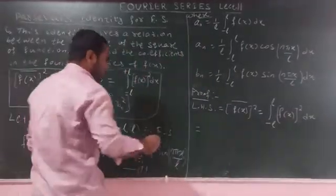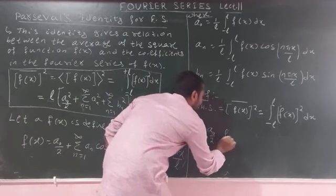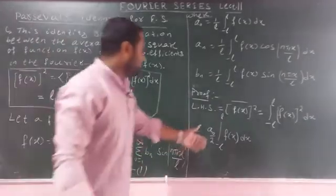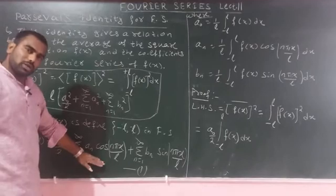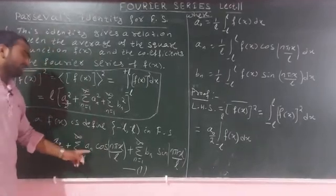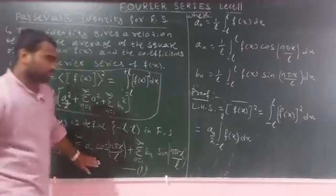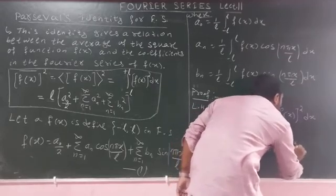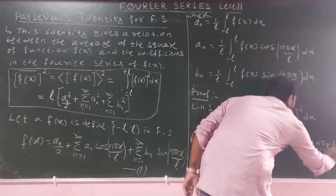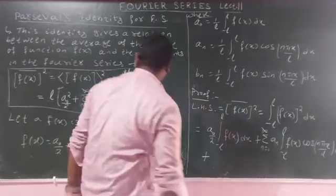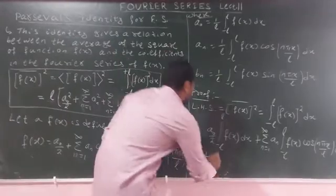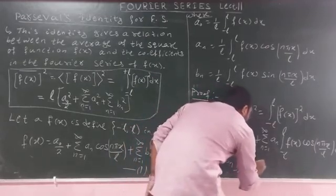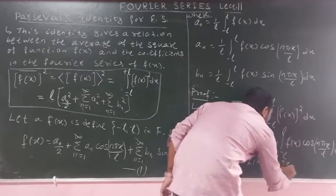On the left side we get a₀/2 multiplied by f(x), integrated from minus l to l — a₀/2 is a constant. The second term gives a summation from n=1 to infinity. Then the third term gives a summation from n=1 to infinity of bₙ, with the remaining integration from minus l to l of f(x) sin(nπx/l) dx. So both sides of equation 1 are multiplied by f(x) and the limits are integrated from minus l to l.